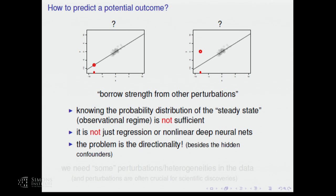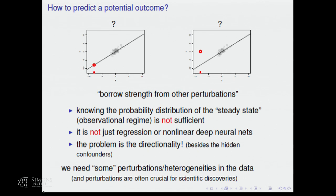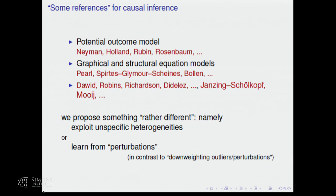We want to borrow strength from other perturbations, or more broadly, from heterogeneity in the data set — informative outliers. Of course, many people have worked on causal inference. There is a potential outcome model; Neyman made very early contributions in his master's thesis before coming to Berkeley. There are graphical and structural equation models — Pearl and many others. We propose something rather different.